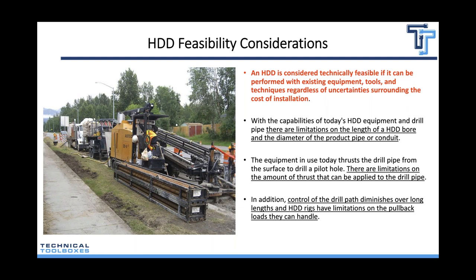Our drill rig thrusts the drill pipe, pushing against the drill bit against the soil, while the rig provides torque for rotation. With that thrust and torque, we penetrate and put a hole in the ground. There are limits on how much thrust and torque we can apply to the drill pipe — exceeding those limits can damage the drill pipe. There are also limitations on steering as we get to longer and longer drills — we lose the ability to push that drill rod without rotation.